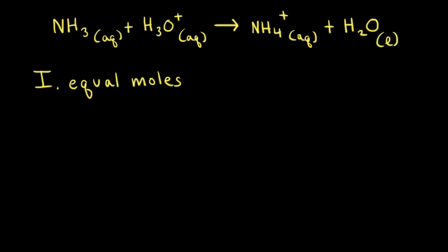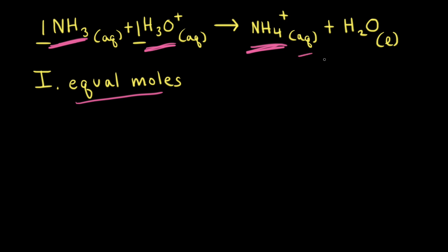Now we'll consider three different situations. In the first situation, we have equal moles of weak base and strong acid. Looking at the net ionic equation, the mole ratio of ammonia to hydronium ion is one to one. Therefore, the weak base and strong acid will completely neutralize each other and produce the ammonium ion NH4+. To find the pH, we need to think about the ammonium cation in aqueous solution.